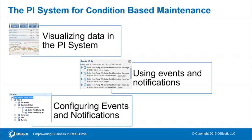In this video, we will show how the PI System can be used to facilitate condition-based maintenance. We will start with a quick overview of basic visualization of data within the PI System. Next, we will show how the usage of events and notifications can help end users more easily evaluate the condition of assets, allowing said users to more efficiently schedule maintenance events. Lastly, we will demonstrate the configuration of the events and notifications that help users diagnose issues with equipment and processes.